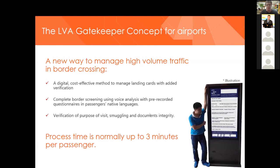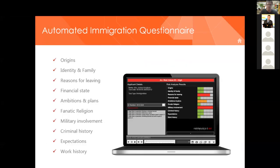Another thing we would like to introduce is the gatekeeper concept, which can help screen people in airport settings — both landing cards and onboarding cards. We can work with any volume and process any type of need using automated solutions. Another use case for HLS is automated immigration questionnaires — understanding where immigrants come from, their desires, possible military involvement, or criminal history. Sometimes they are missing papers; sometimes we just need to know what to expect and make a better decision about follow-up.